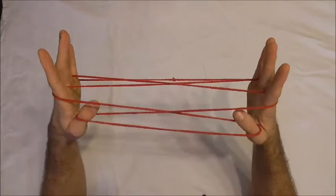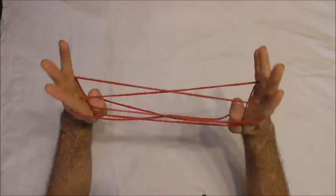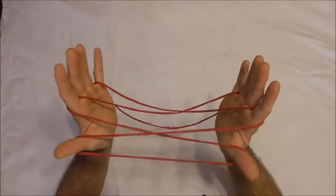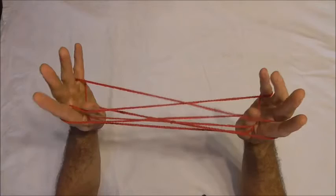So I'll go underneath all the strings, pick up that far little finger string on the shoulders of my thumbs and then insert my thumbs into that gap between the little finger loops and the pointer finger loops. I'll do that one more time. Collect that little finger string and then up through that gap.